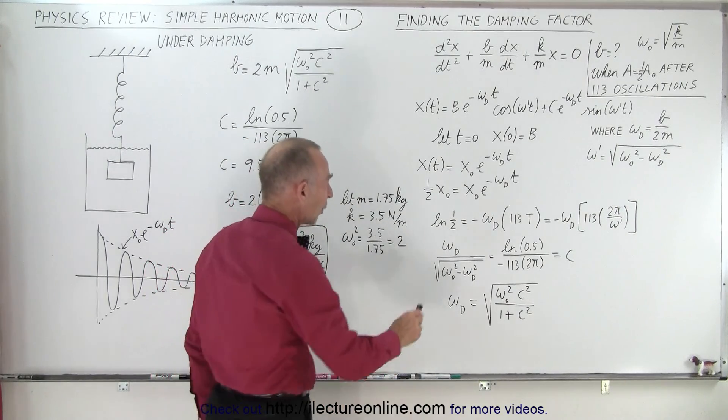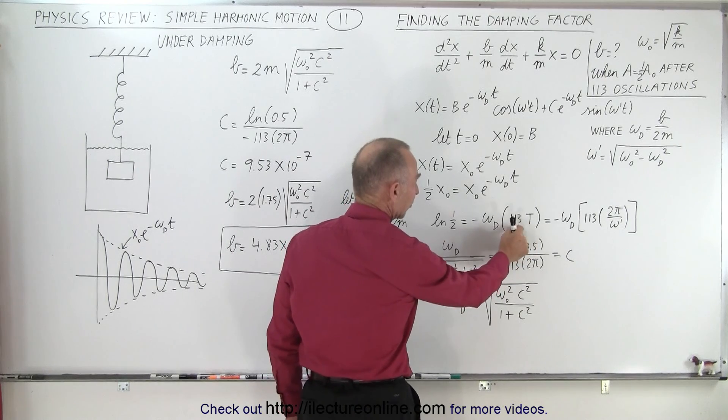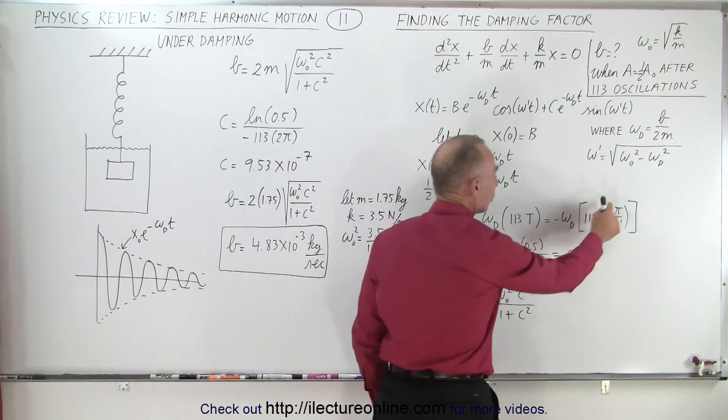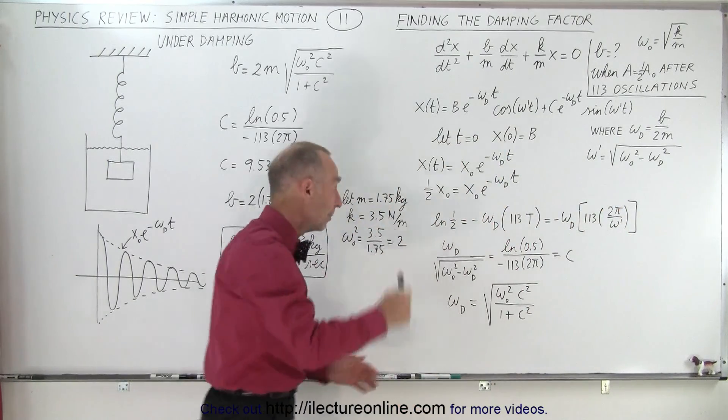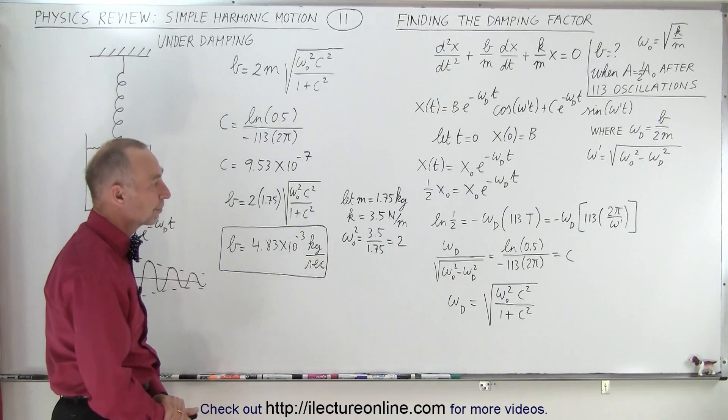Notice it gets kind of messy. So once we have it written like this, and the period of oscillation, so this is 113 times the period of oscillation. The period of oscillation is going to be 2 pi over omega sub prime. Omega prime, of course, is the angular frequency right here on the oscillations.